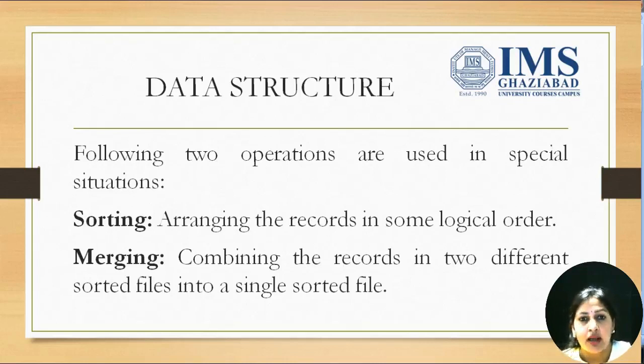Next is merging. Merging means combining the records in two different sorted files into a single sorted file. That means if we have two lists of students arranged roll number wise and we want them to merge and combine in a list so that the roll numbers remain in sorted order, that process is known as merging.